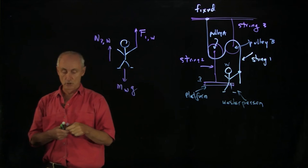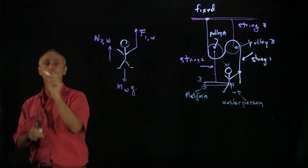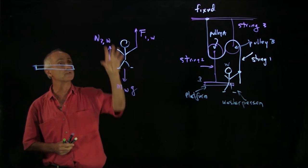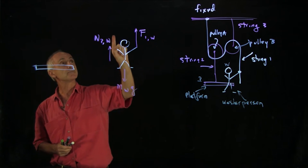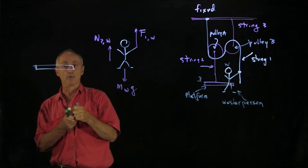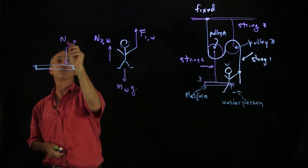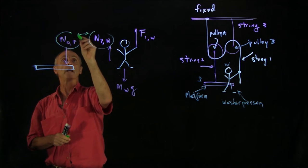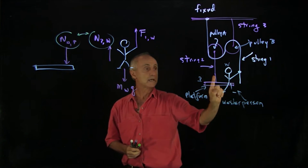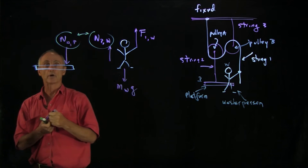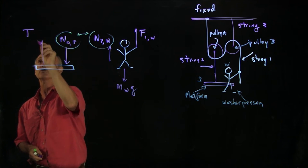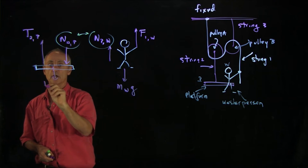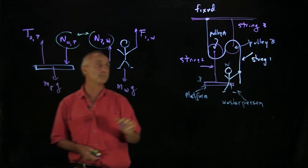Now let's focus on the platform. Let's begin by identifying the Newton's third law pairs — the internal forces. The platform is pushing the person up, so the person is pushing the platform down; we write that as N on the platform due to the washer, and circle this third law pair. String two is pulling the platform up, giving us tension T2 on the platform. Finally, there's the gravitational force on the platform.